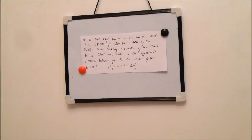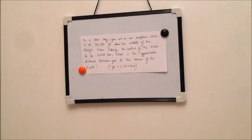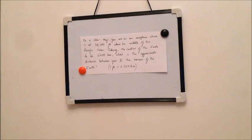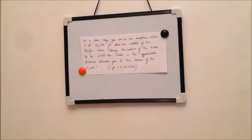So the first question reads as follows. On a clear day you are on an aeroplane which is at 38,000 feet above the middle of the Pacific Ocean, taking the radius of the earth to be 6,400 kilometres. What is the approximate distance between you and the horizon of the earth? It is also given that one foot is equivalent to 0.3048 metres.